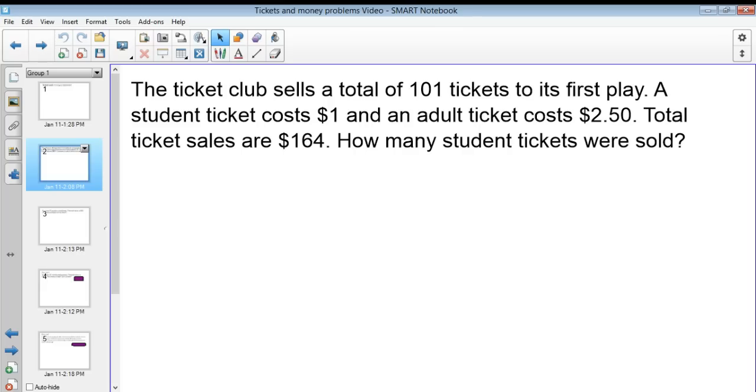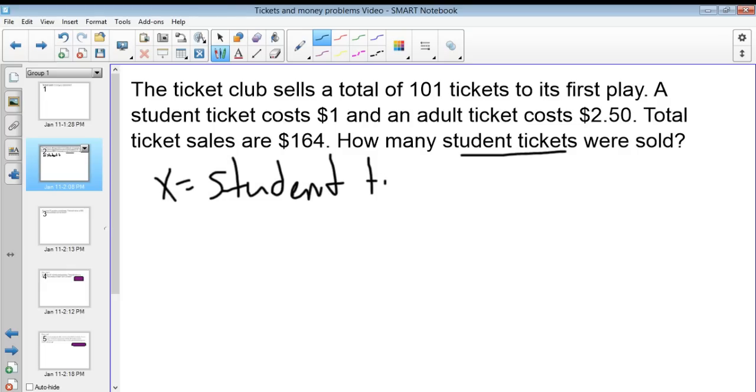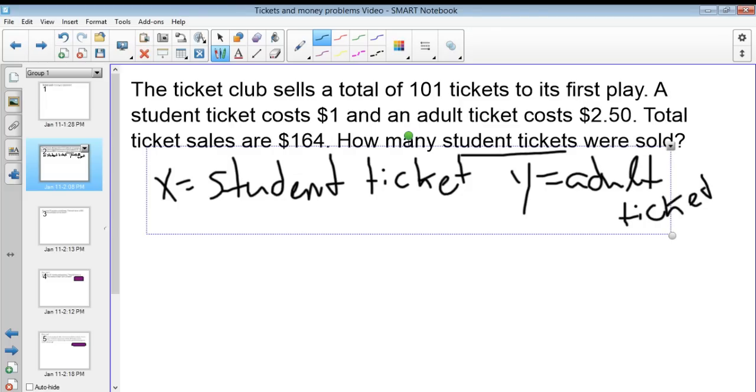The ticket club sells a total of 101 tickets to its first play. A student ticket costs $1 and an adult ticket costs $2.50. Total ticket sales are $164. How many student tickets were sold? This one specifically is asking just about student tickets. Let's say that X is going to represent student tickets and Y is going to represent adult tickets. You can use whatever variables you want, I'm just using these two. But make sure that you always define them.